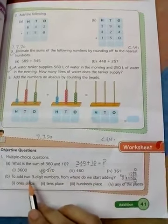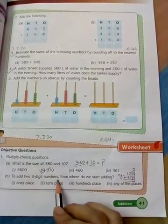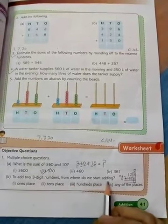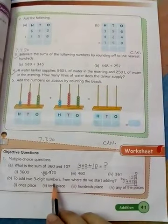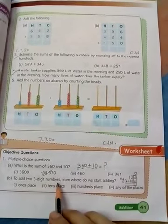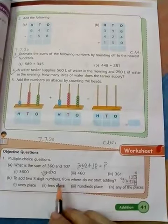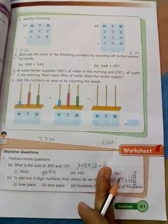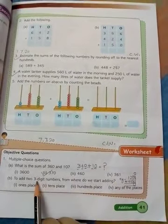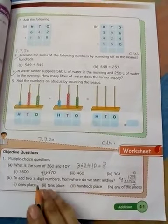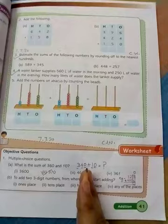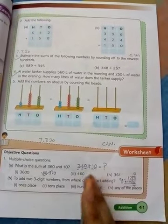Part B: To add 2, 3-digit numbers, from where do we start adding? Students, whenever we have 2 addends and we are adding, we always begin with the ones place. This question is just to confuse you. Whatever the digit, we always begin the addition with ones place.